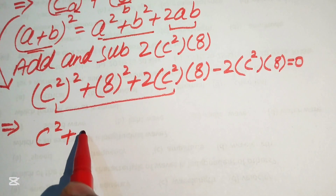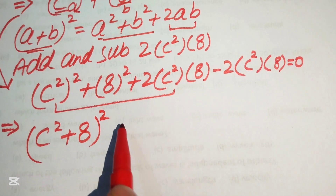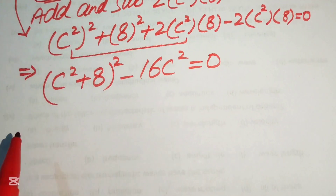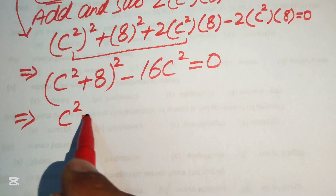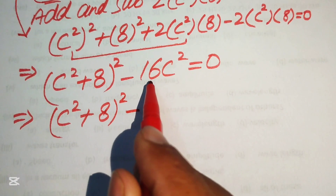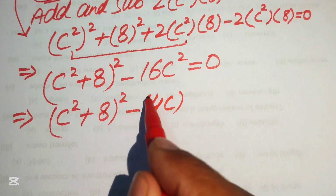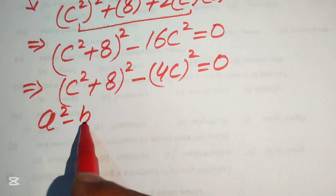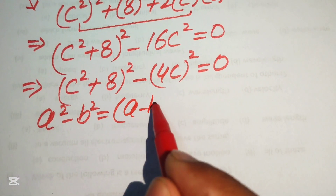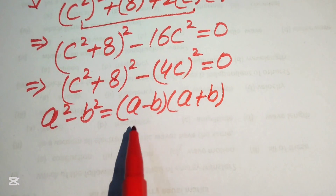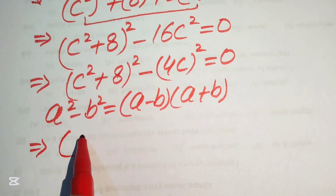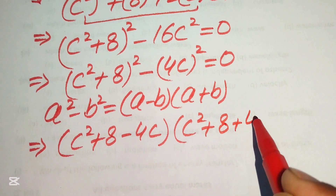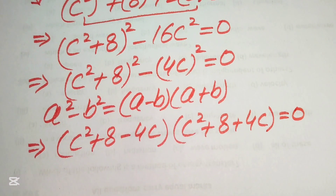We combine the first three terms as c squared plus 8 whole squared, and 2 times 8 becomes 16, so minus 16 times c squared remains. We rewrite 16c squared as 4c whole squared, giving us c squared plus 8 whole squared minus 4c whole squared equals 0. Using the formula a squared minus b squared equals a minus b times a plus b, we factor this as c squared plus 8 minus 4c times c squared plus 8 plus 4c equals 0.